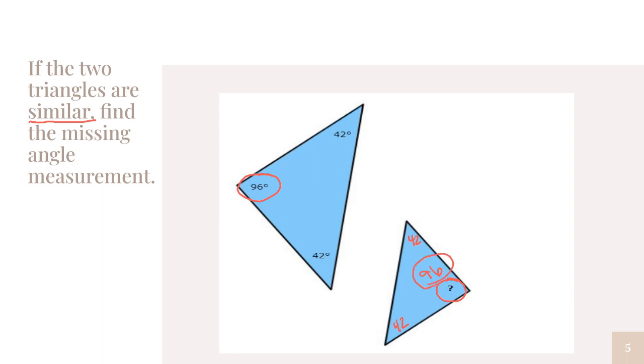It's important that you can pick out what angles correspond with one another. Even though they're in a different position, it's important that you can tell that these two angles would match up, and then 96 would match up with this one. That's probably the hardest part about this lesson—matching up the corresponding angles.